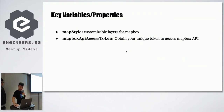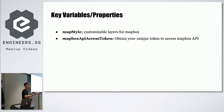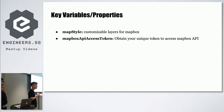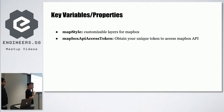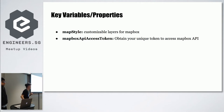Mapbox essentially works as a layer of map, so because of that you're actually able to pile different layers on top of one another. They actually offer you a map style — it allows you to customize different styles and customize different layers for Mapbox as well.